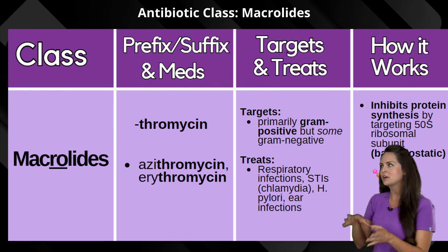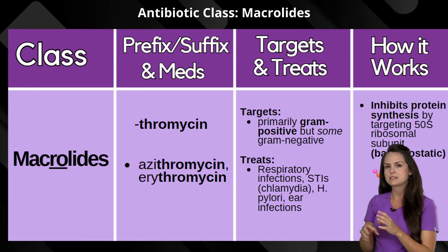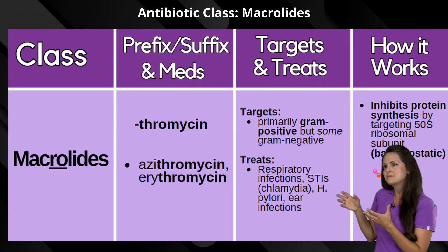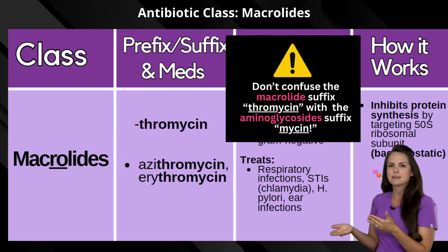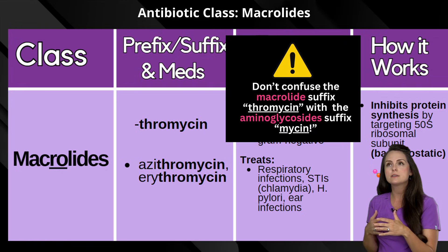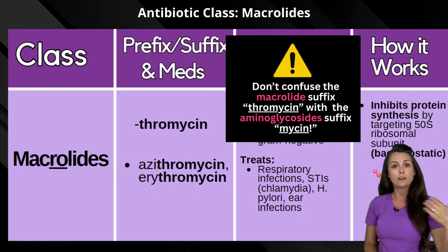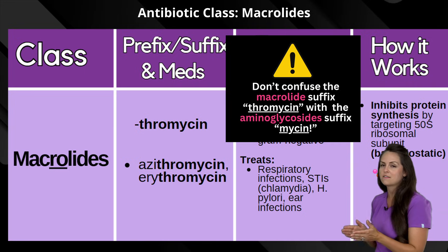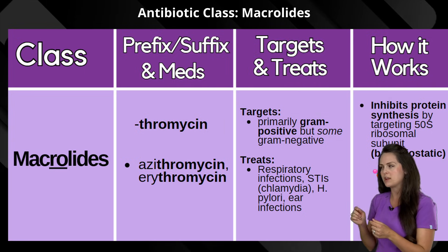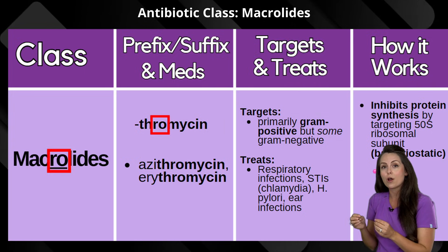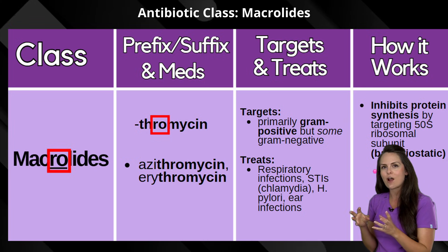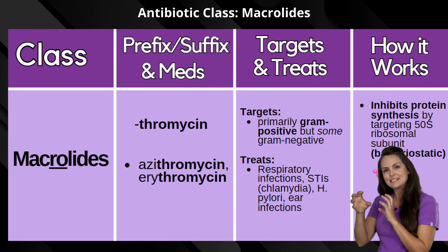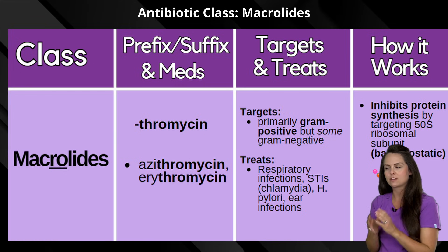As a side note, when looking at these common prefixes and suffixes, make sure you're looking at the whole suffix. Some people glance at the name, see the '-mycin,' and think it's an aminoglycoside — but it's not. Look more carefully at that suffix. Notice the 'RO' in '-thromycin' — that same 'RO' you hear in 'macro' — which should help you see the difference and avoid confusion.